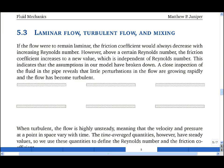If the flow in a pipe were always laminar, then the friction coefficient would always be 16 divided by the Reynolds number. However, we observe that above a certain Reynolds number, the friction coefficient increases to a new value which is independent of Reynolds number. This shows us that the assumption of laminar flow has broken down.